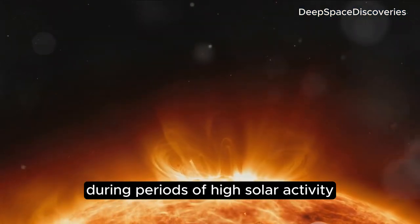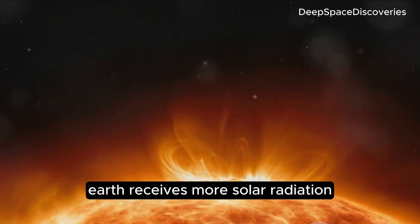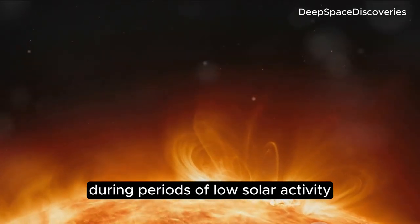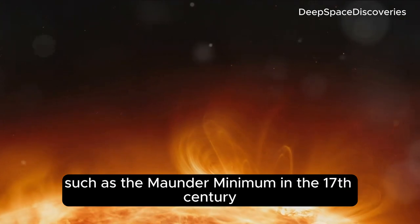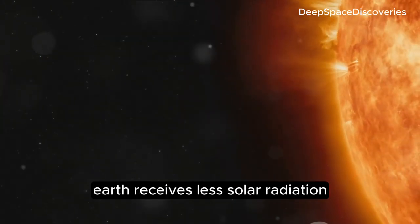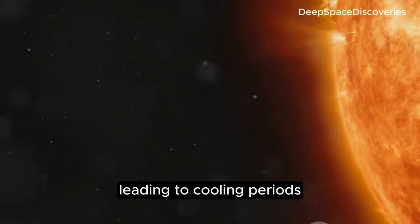During periods of high solar activity, Earth receives more solar radiation, causing slight warming. In contrast, during periods of low solar activity, such as the Maunder Minimum in the 17th century, Earth receives less solar radiation, leading to cooling periods.